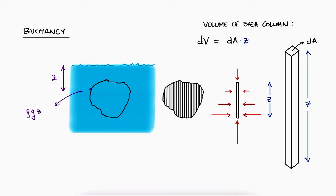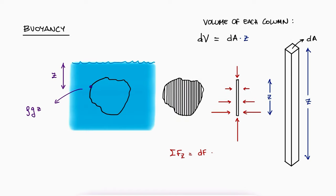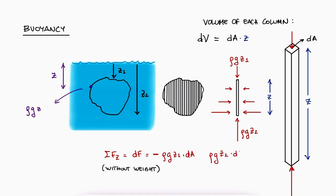Now, if we do a sum of forces in the z direction for any of the columns, but only the forces that result from the pressure differences, meaning without the weight of the material inside the column, we would get the pressure at the top, which is rho g z1 times dA going down, and the pressure at the bottom, which is rho g z2 times dA going up.